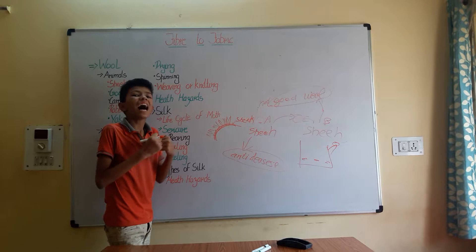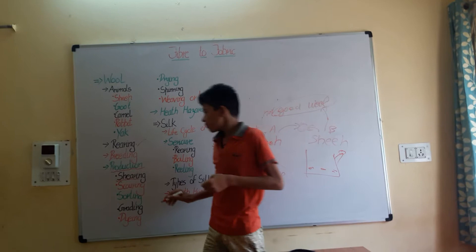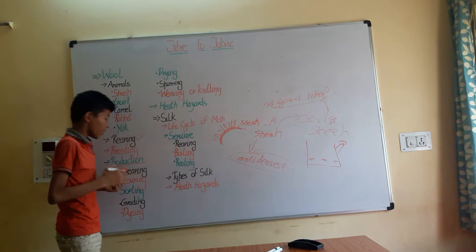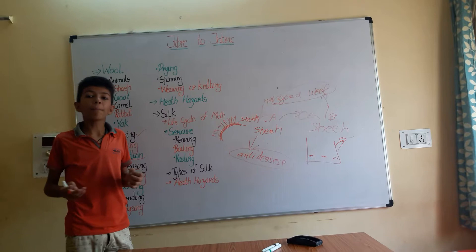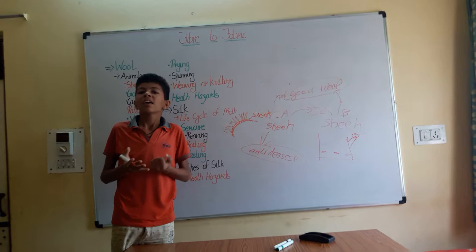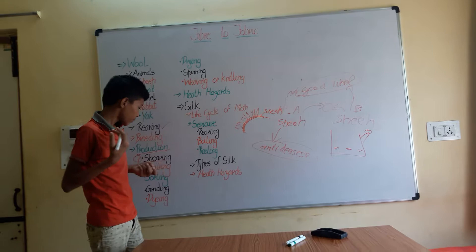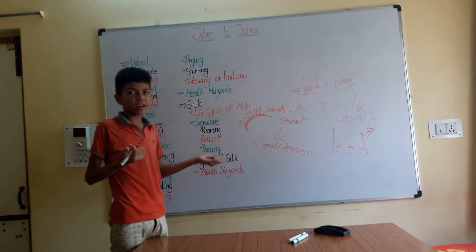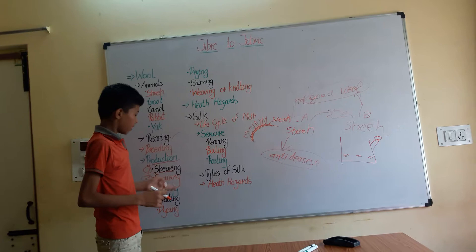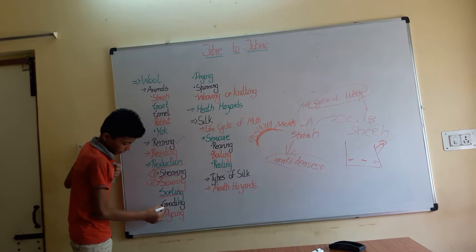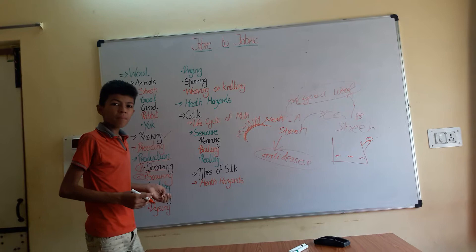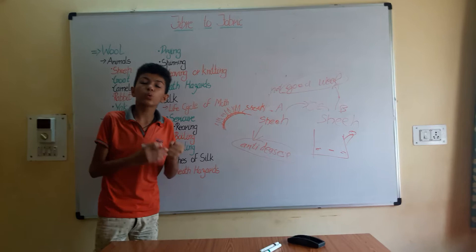Shearing is mostly done in summers because the sheep need their wool for protection from harsh winter climate. After shearing, the second step is scouring — washing the fleece using detergent or soap, which is alkaline. After washing, the fleece may have some damaged hair, which is removed in the process of sorting, mostly done manually by hand. Then there is grading, where the wool is sorted according to length, color, and texture.